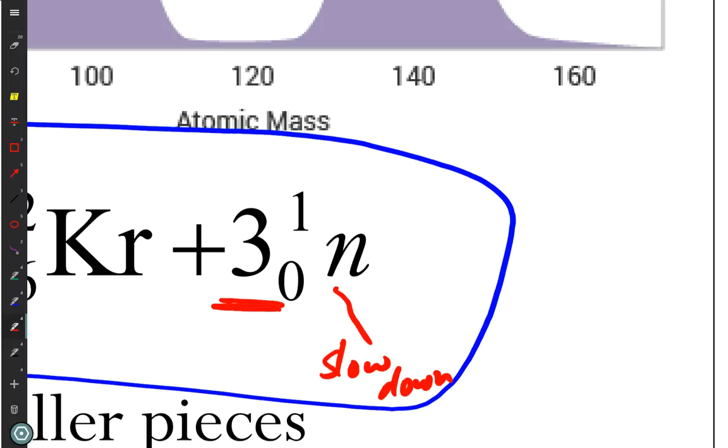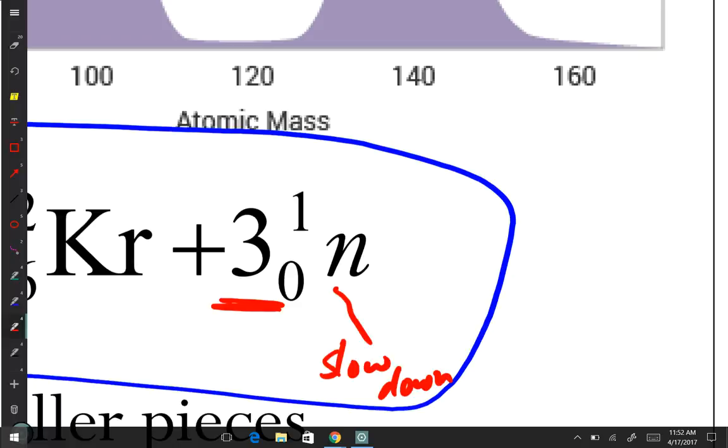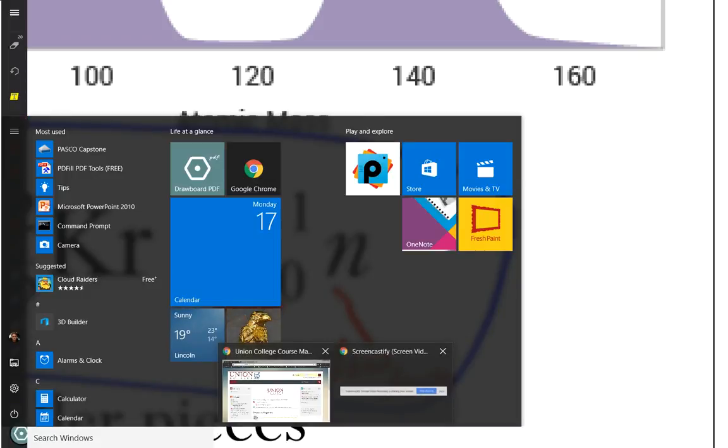So something has to happen to slow those down. We call the low energy ones thermal because they can measure their speeds on a temperature scale. And so you have to have something that slows these down to make the reaction move forward. So I will continue with nuclear power. I'll talk about bombs and that kind of thing next class period. Oh, please.